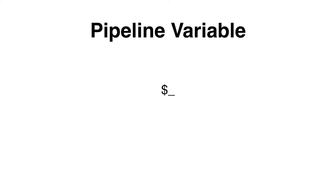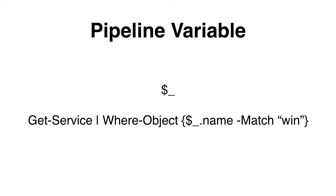The pipeline streams the information into the dollar-underscore pipeline variable. From here you can use it in either the where-object or the for-each-object statements. In this example, we are getting a service, specifying where-object, then calling the variable dollar-underscore with the property dot-name, and matching it if it contains the word 'win'.